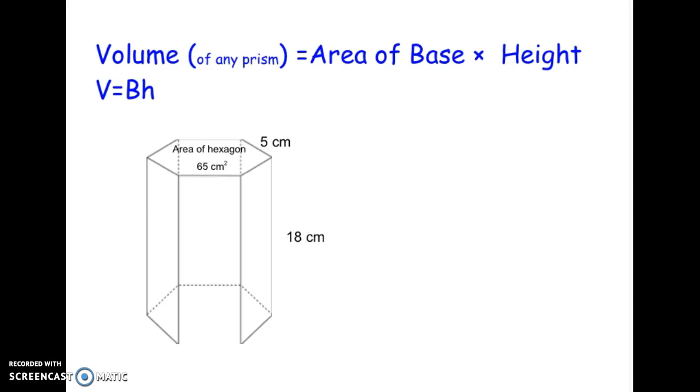So this is a very simple formula I think for volume. Volume of any prism can be found by taking the area of the base and multiplying it by the height. We denote the area of the base with this big B right here, a capital B. So most of the time, at least for your seventh grade purposes, the area of the base is going to be given to you if it's not a triangle or a rectangle.